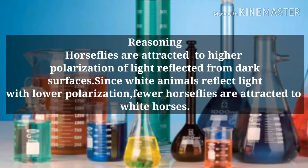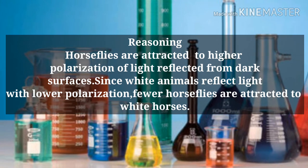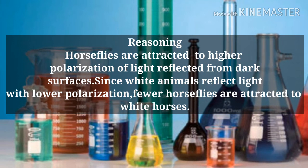And last is the reasoning: horseflies are attracted to higher polarization of light reflected from dark surfaces. Since white animals reflect light with lower polarization, fewer horseflies are attracted to white horses.